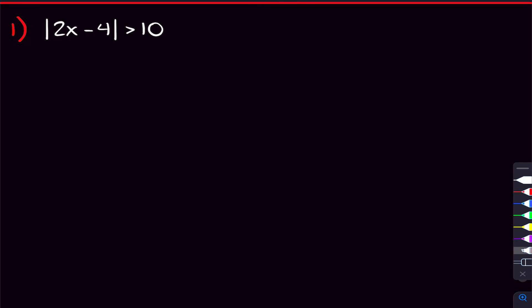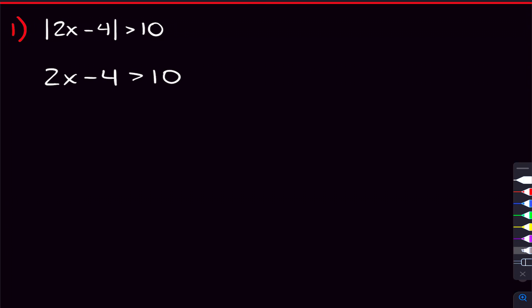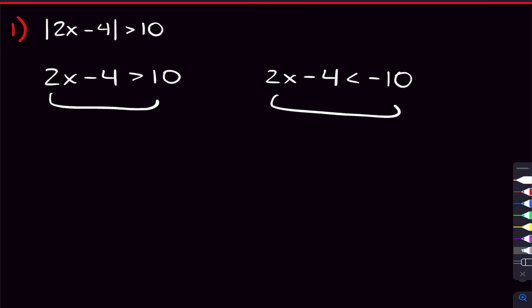We're going to start off with this first inequality. When you see an absolute value on one side with an inequality, here's all you have to do. We're going to write 2x minus 4 is greater than 10 without the absolute value. And we'll also write 2x minus 4, but we're going to flip the inequality — so instead of being greater than, it's going to be less than — and we're going to change the sign of the 10, so instead of positive 10 it's going to be negative 10. Right there, you've already set up your two inequalities to solve.